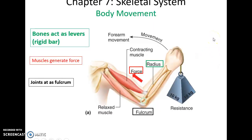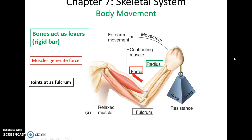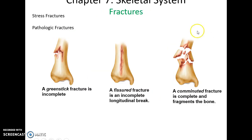The bones act as levers — they are rigid structures that resist the forces of muscles that pull on them, leading to movement at the fulcrum, which in our body is called the joint.